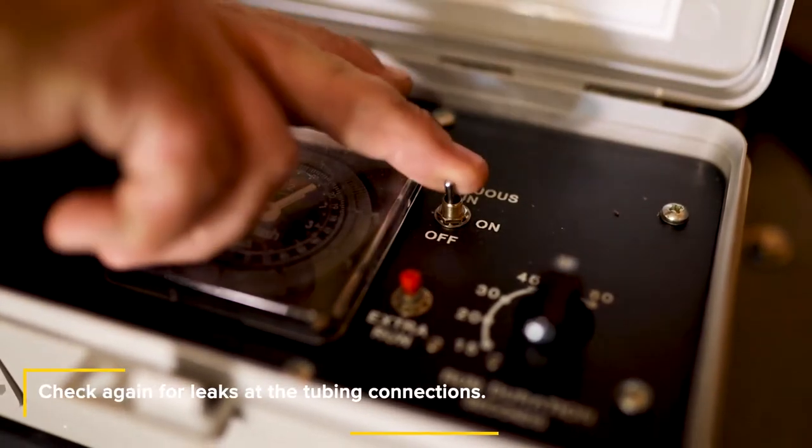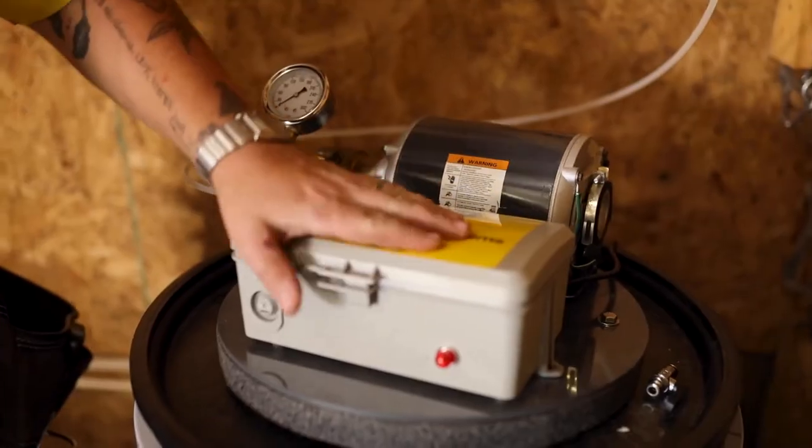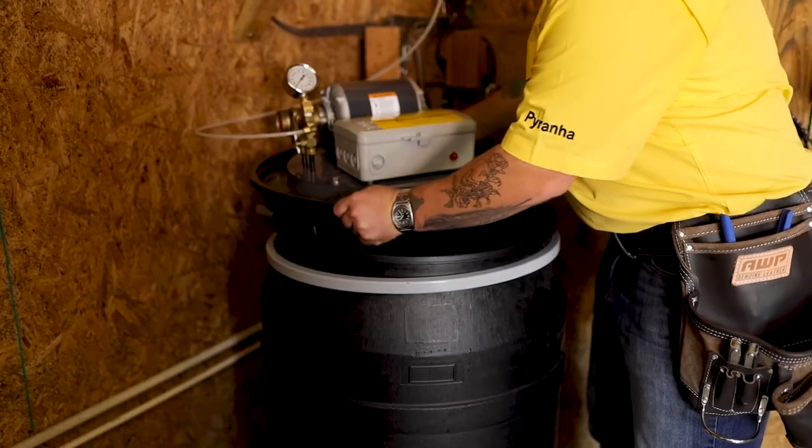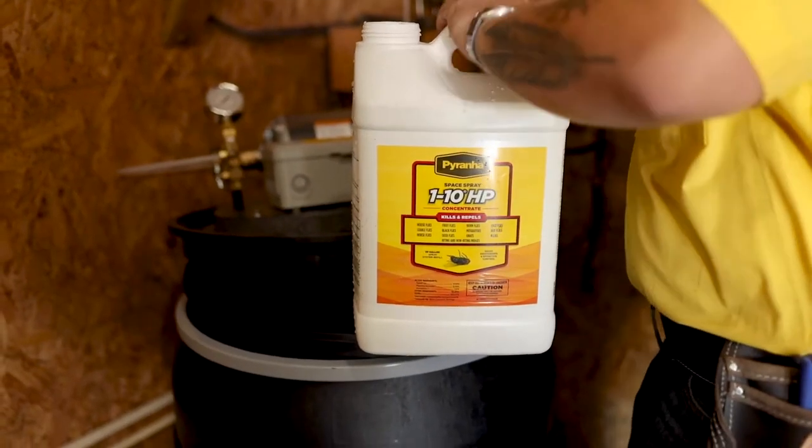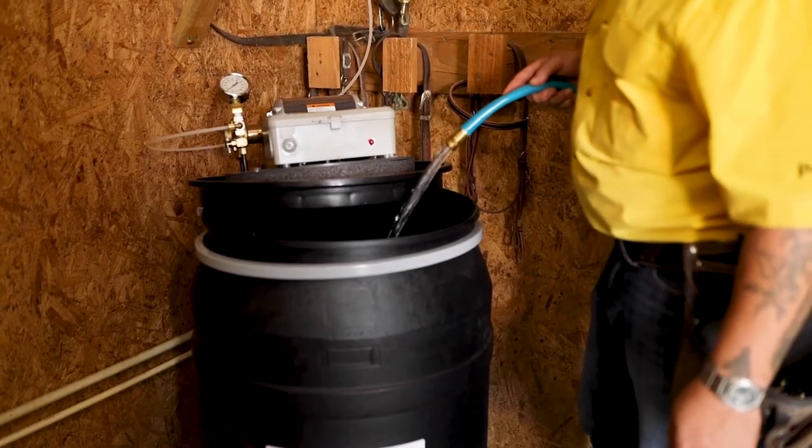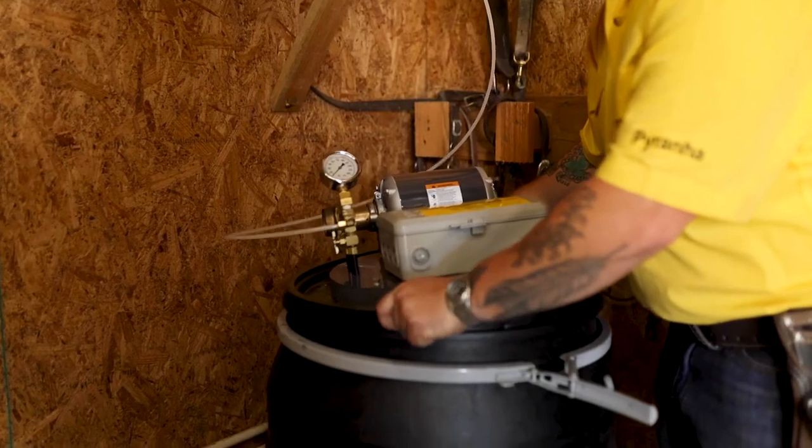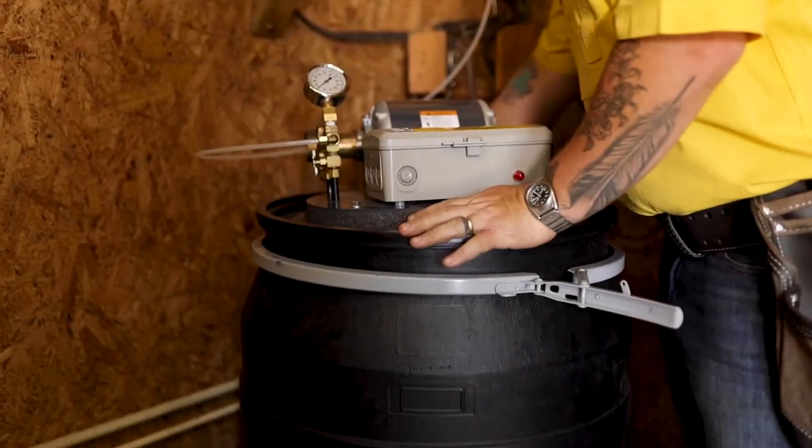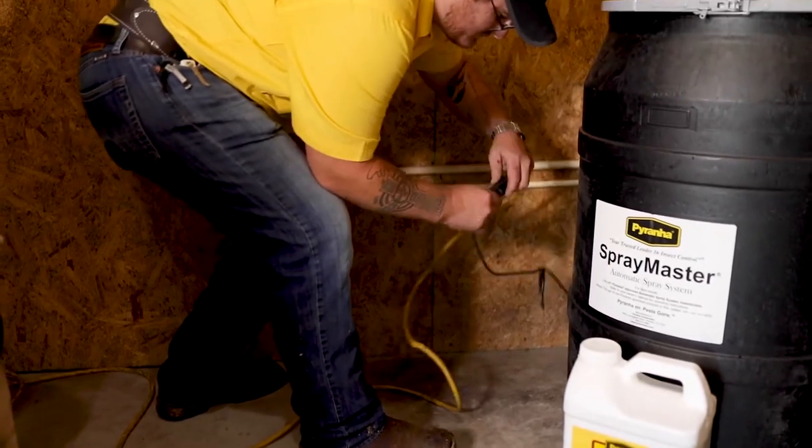Turn the run duration knob to off and disconnect the electrical cord from the outlet. Close the timer lid. Carefully lift the PVC circle and shift it to the side of the drum lid. Add the entire contents of the insecticide concentrate to the drum and finish filling the drum with clean water to four inches from the top of the drum. Replace the PVC circle on the drum lid, being careful to not pinch the float line or the tubing, and reconnect the electrical cord.